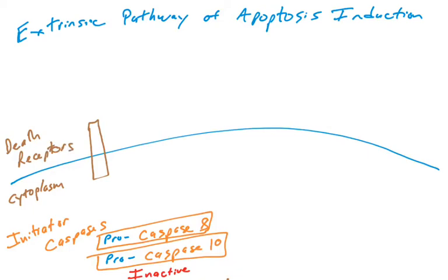Now a signal is going to come from outside the cell. How do cells receive signals from the outside world? They typically use receptors. Here we're going to have a protein on the plasma membrane of the cell that, like a growth factor receptor or a cytokine receptor, is going to bind to molecules outside the cell. We're going to call these death receptors. There's a family of proteins known as death receptors found on the surface of many human cells, and those proteins can increase in levels if cells think something might be wrong with them. A death receptor engages a ligand outside the cell and sends a signal into the cell to the initiator caspases to initiate apoptosis.